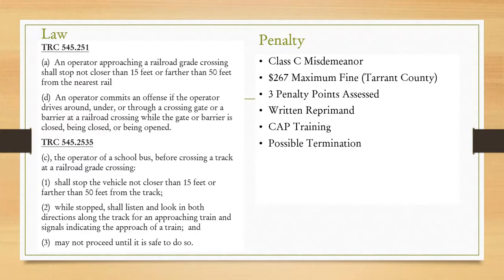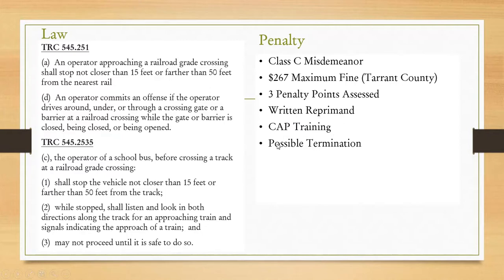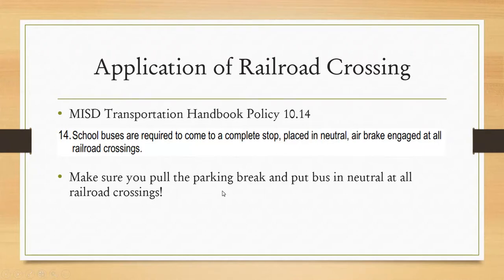The Transportation Code further states that the operator of a school bus, before crossing a railroad track, shall stop the vehicle no closer than 15 or farther than 50 feet from the track. While stopped, the operator shall listen, look in both directions along the track for an approaching train and signals indicating the approach of a train, and may not proceed until safe to do so. The MISD policy also requires you to pull the parking brake and put it in neutral. The penalty is a Class C misdemeanor with a $267 maximum fine, three penalty points assessed, a written or verbal reprimand, CAP training, and possible termination.